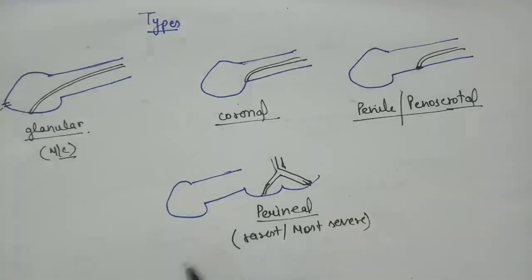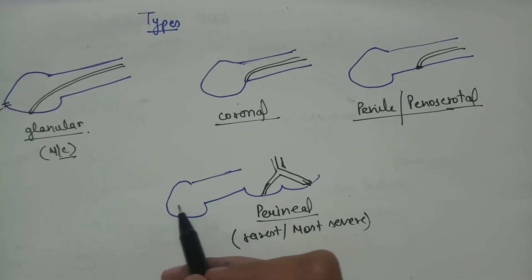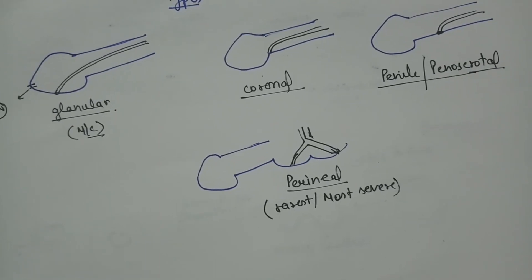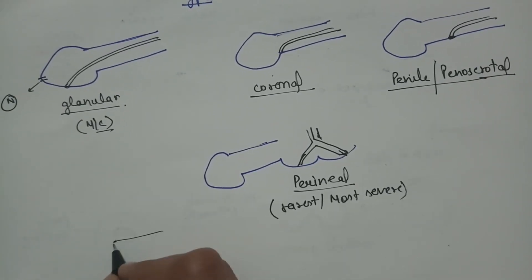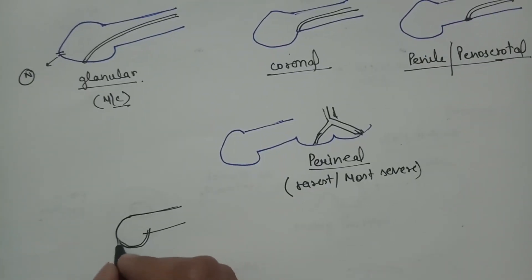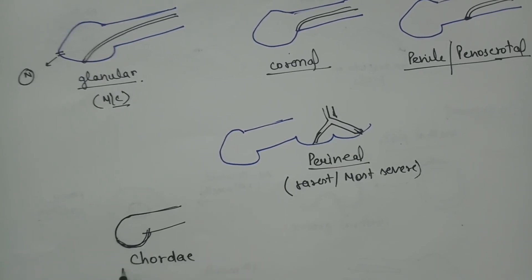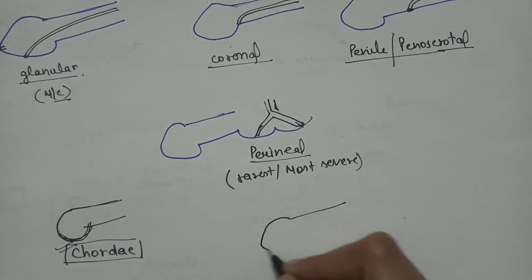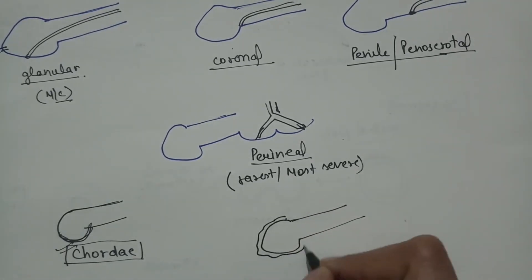In all these types, there is no urethra inside the glans penis. Many times the corpus spongiosum is also absent, which causes the penis to bend toward the ventral side. This ventral bending of the erect penis is known as chordee.